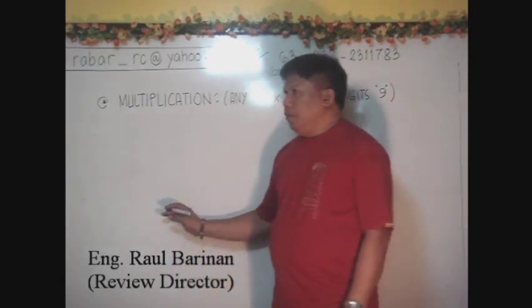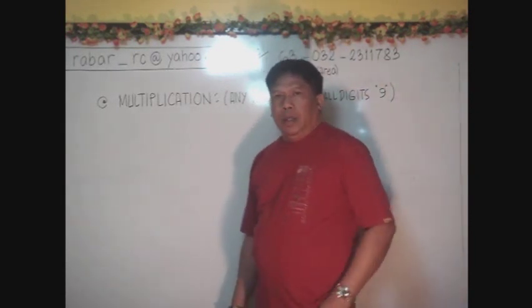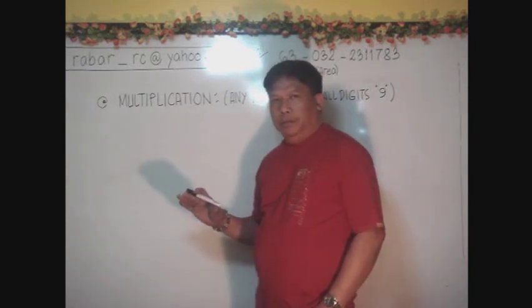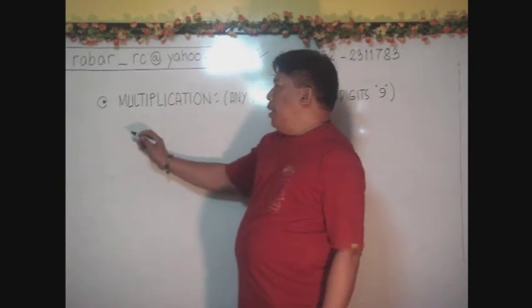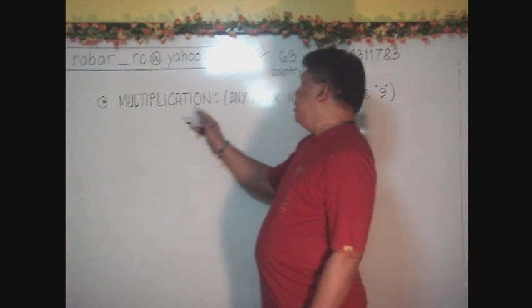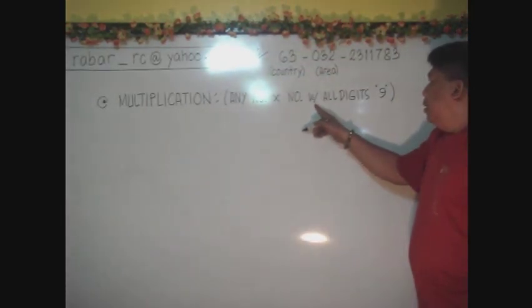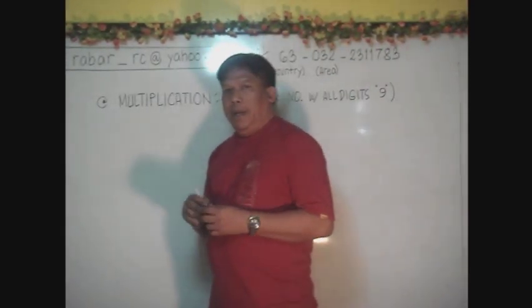Today, I would like to reveal a secret of how to answer directly the faster way of multiplying any number by a number with consistent digits of 9.